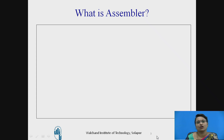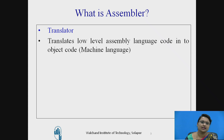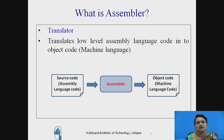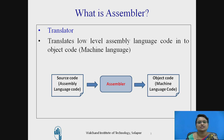Now let us recall what is an assembler. An assembler is generally called a translator which translates low-level assembly language code into object code, which we usually call machine language code. The input for the assembler is a source code in the form of assembly language code and the output is object code in the form of machine language code.